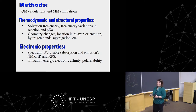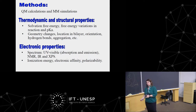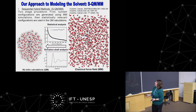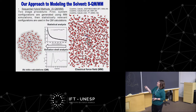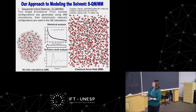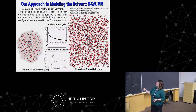The idea is to understand the molecule and propose new molecules that can improve the desired property. When we do that, we use what we call the hybrid QM/MM method — QM is quantum mechanics, MM is molecular mechanics — and we use a procedure systematized in our group that has two steps.